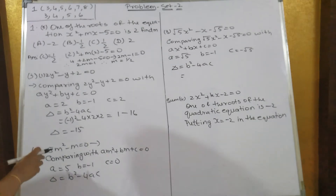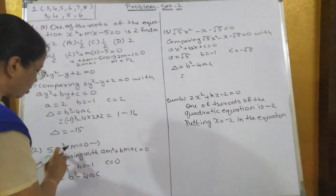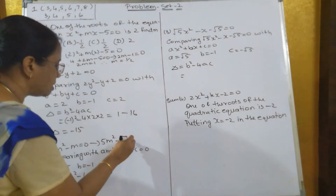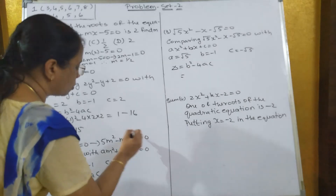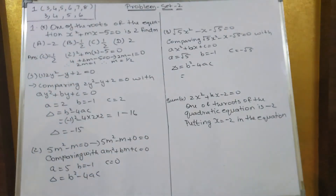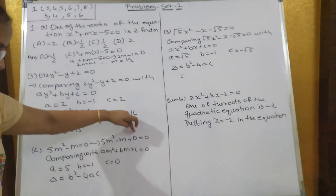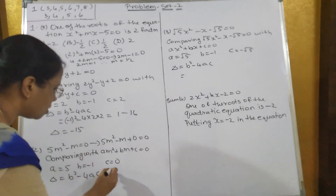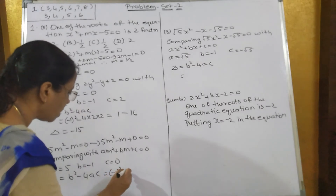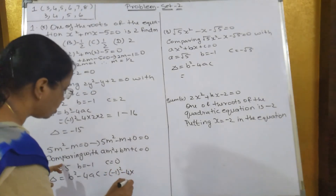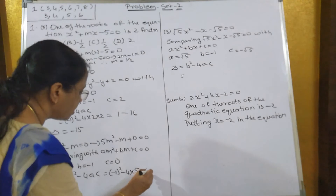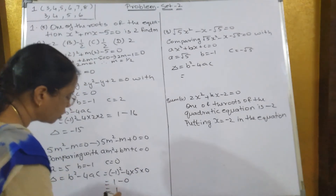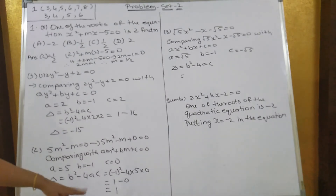Next, comparing with am² + bm + c = 0. The equation becomes 5m² - m, and c is not there so we put 0. So a = 5, b = -1, c = 0. Discriminant: (-1)² - 4×5×0 = 1 - 0 = 1. The value of the discriminant is 1.